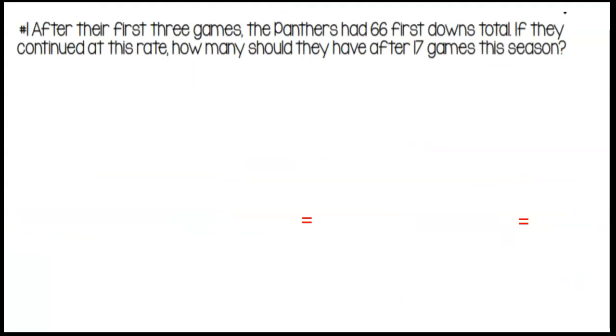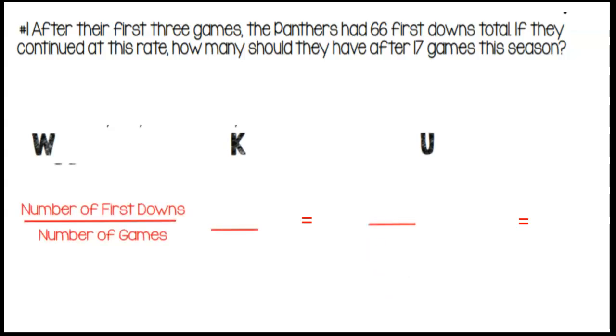After the first three games, the Panthers had sixty-six first downs total. If they continue at this rate, how many should they have after seventeen games this season? The number ratio for this one is number of first downs over the number of games. Our known ratio is going to be sixty-six first downs over three games. Now we know we're looking for how many first downs we would have with seventeen games. We're going to use D to represent that variable. Now pause the video and see if you can solve this proportion.